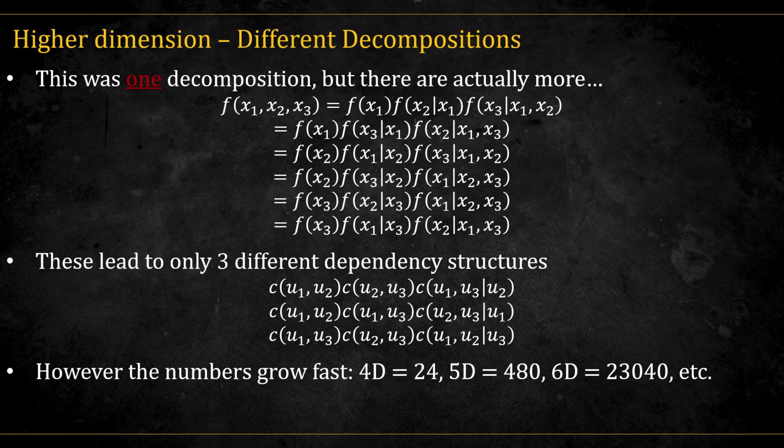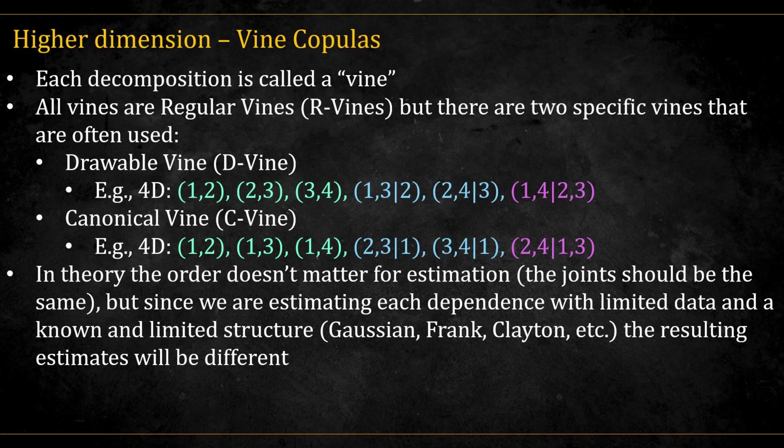But the numbers grow fast. In 4D we already have 24 different ways, in 5D 480, and it keeps escalating from there. Each decomposition is called a vine.